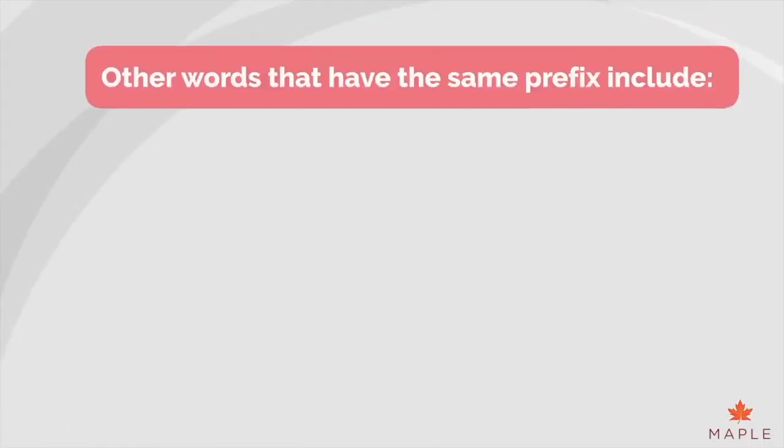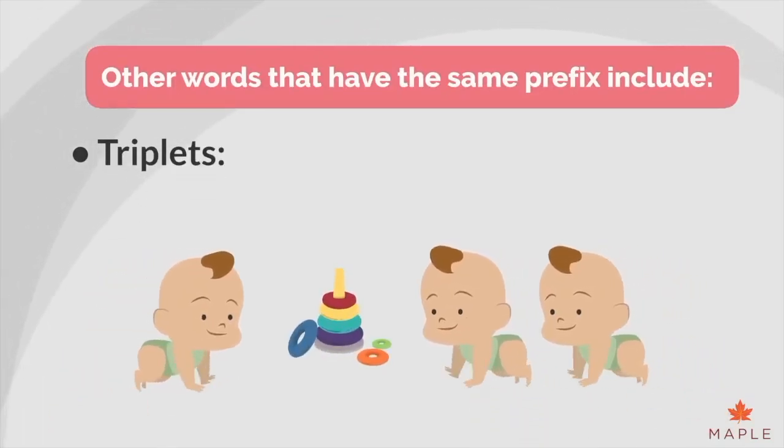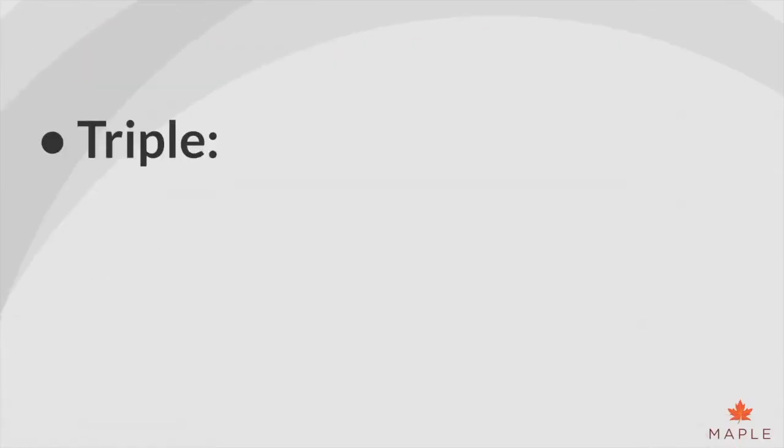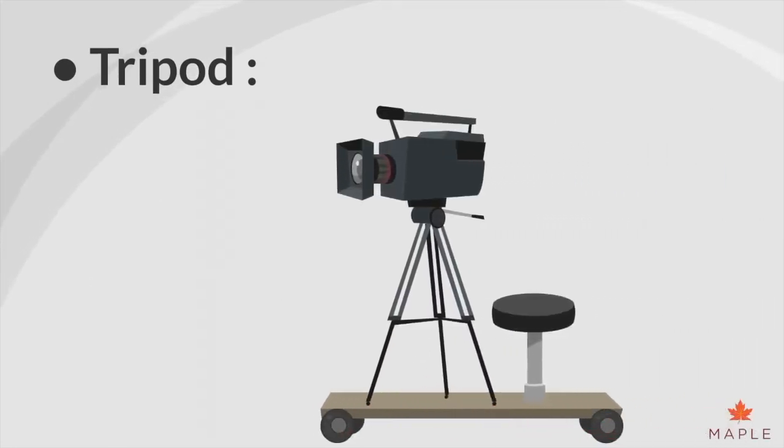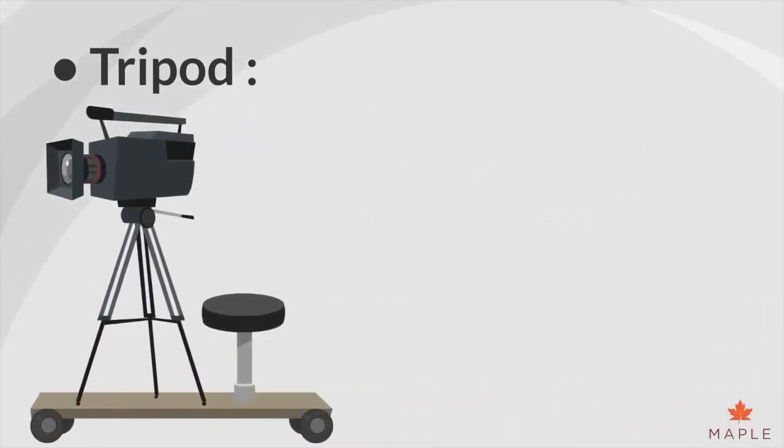Other words that have the same prefix include triplets, one of three offspring from the same pregnancy, triple, to multiply by three, tripod, a three-legged stand for supporting a camera.